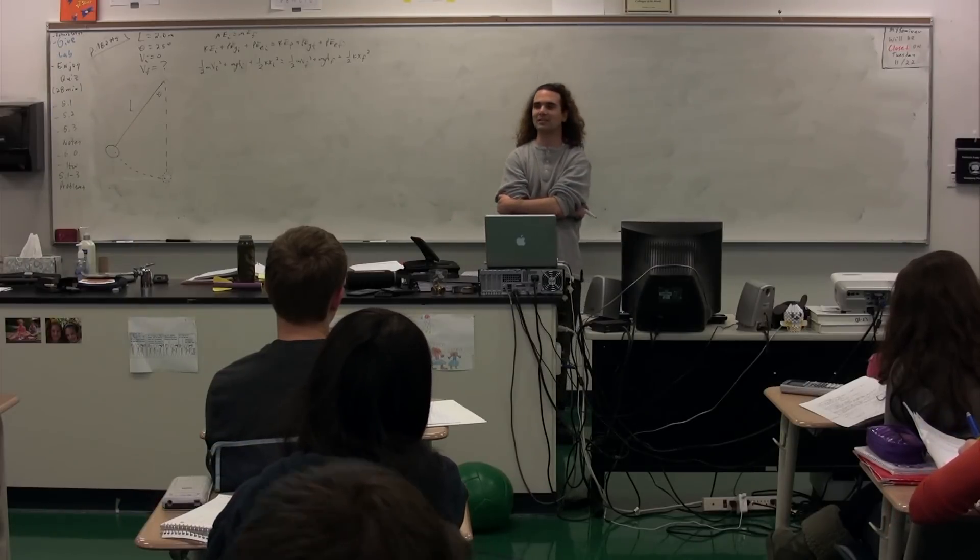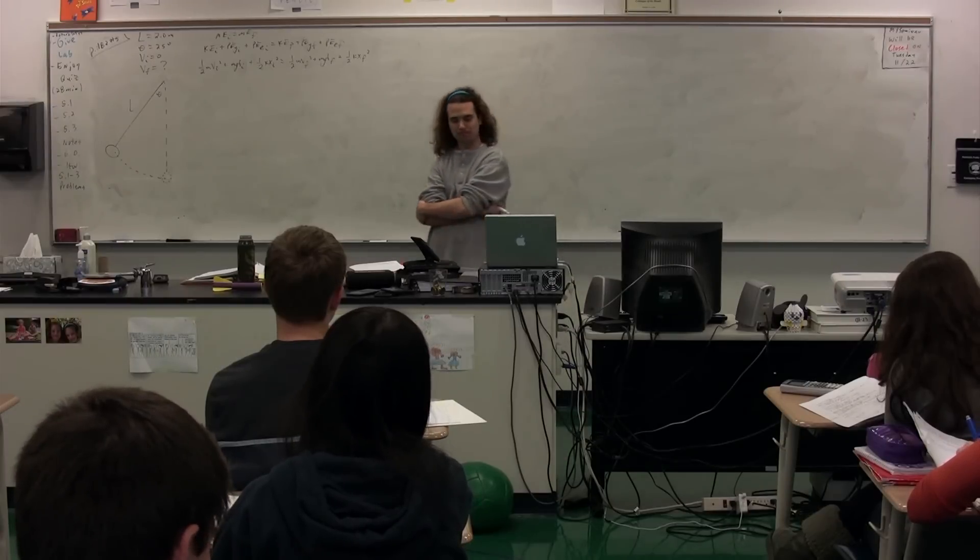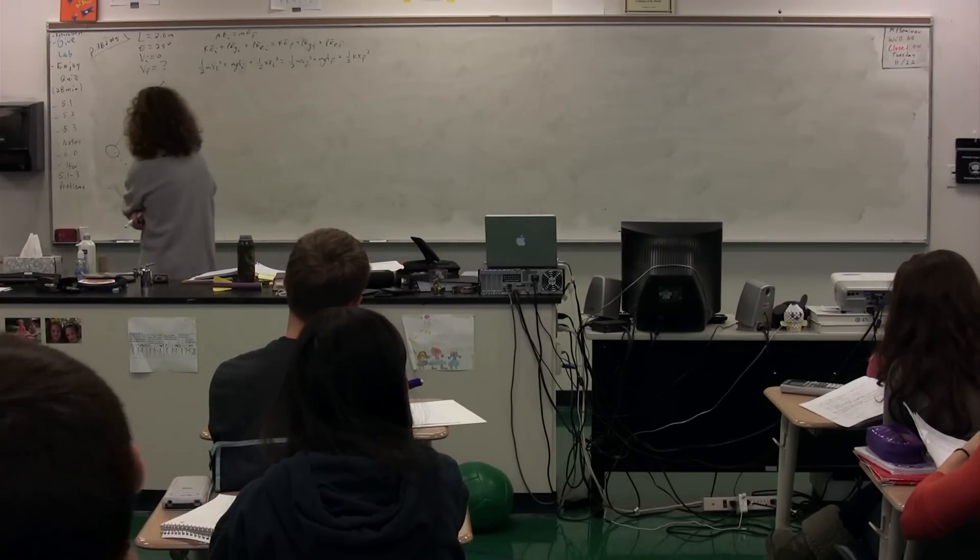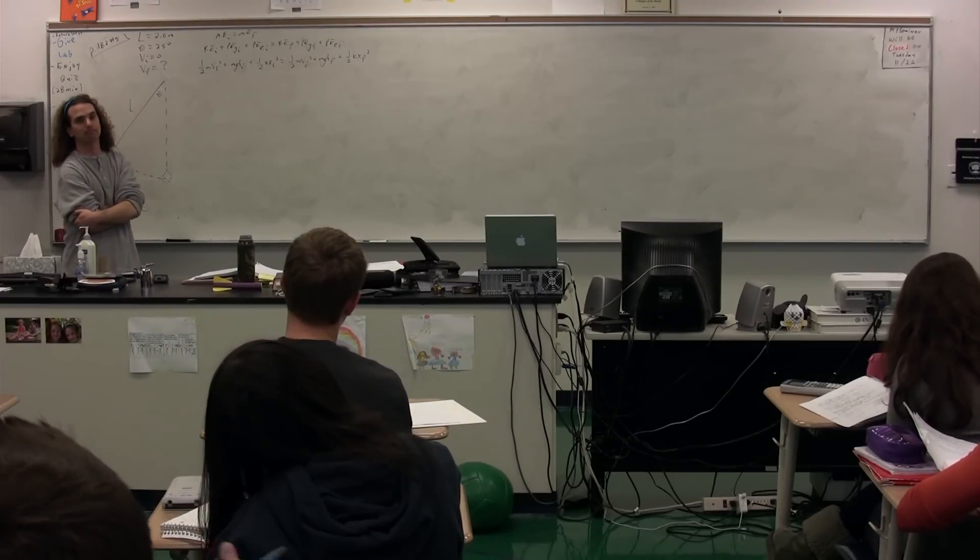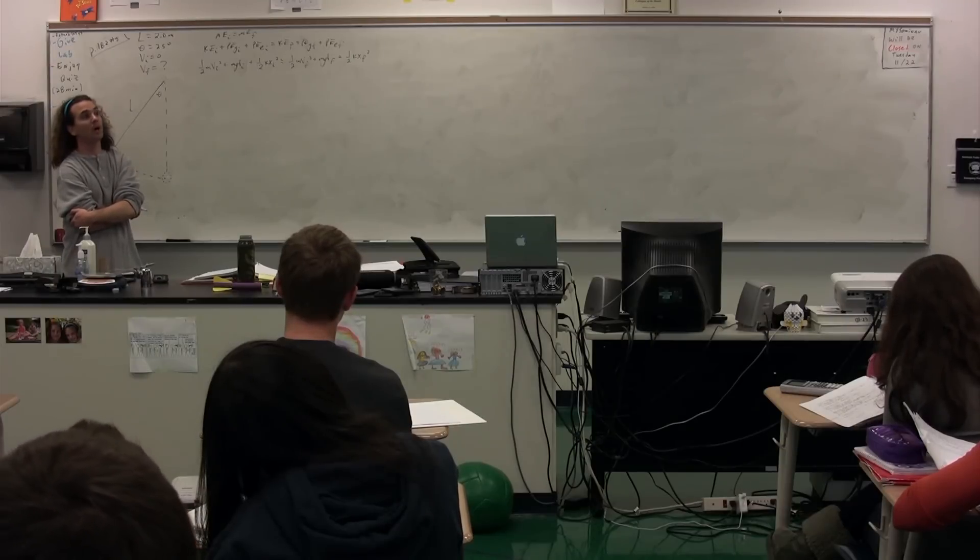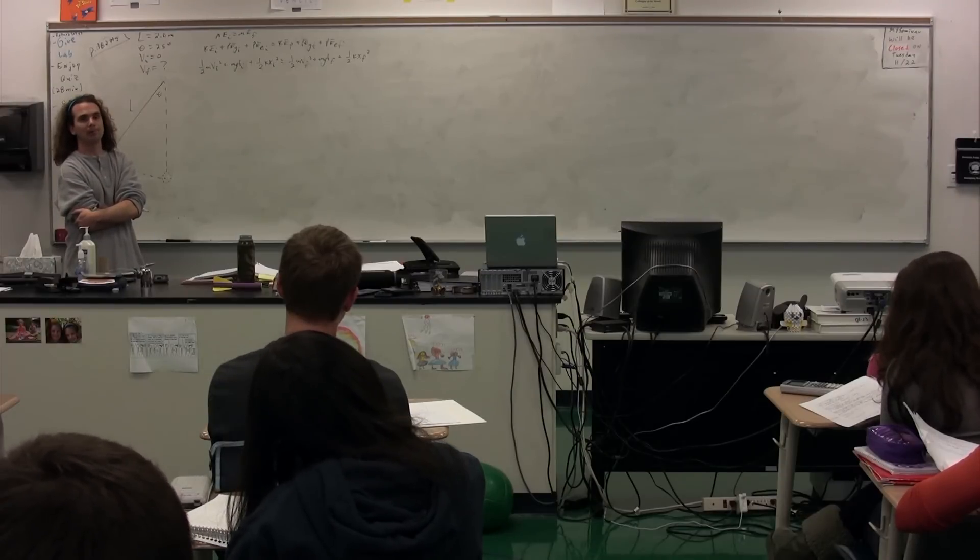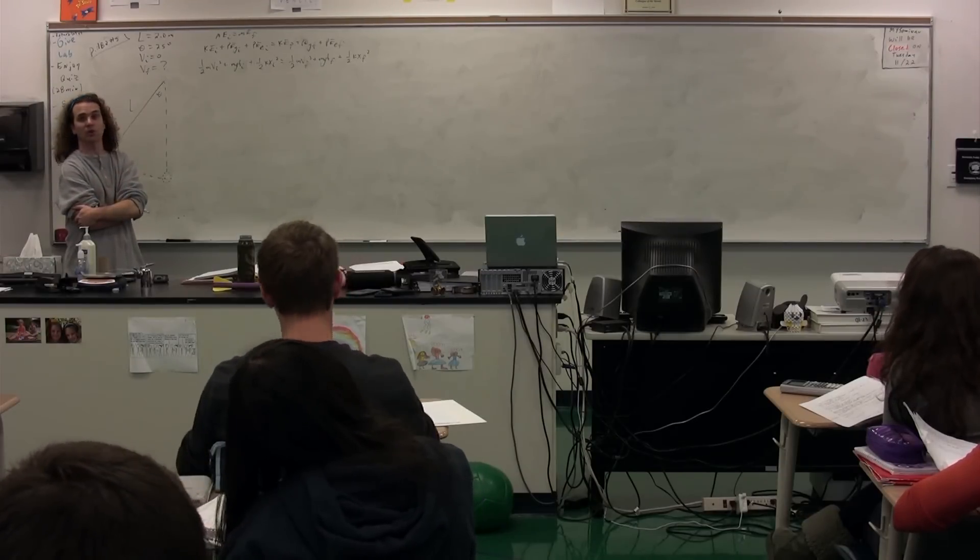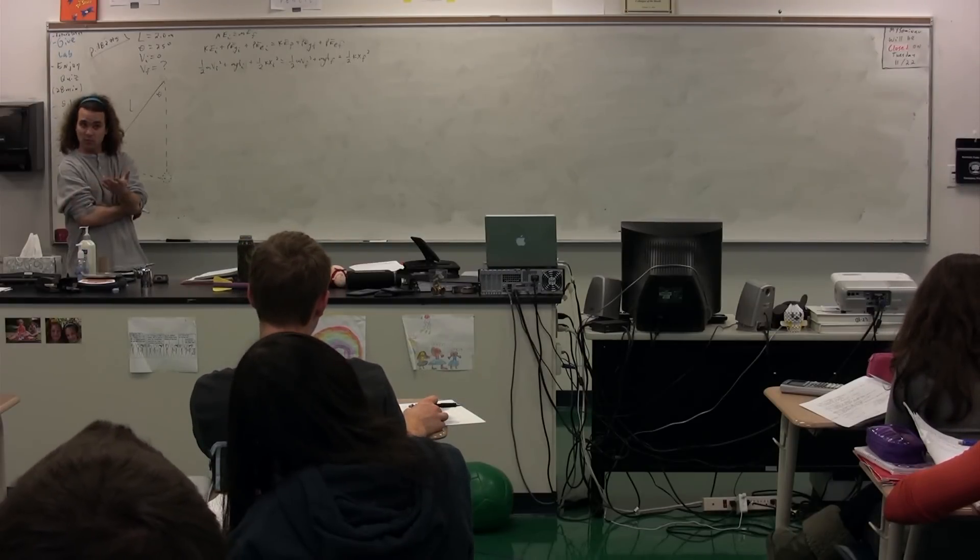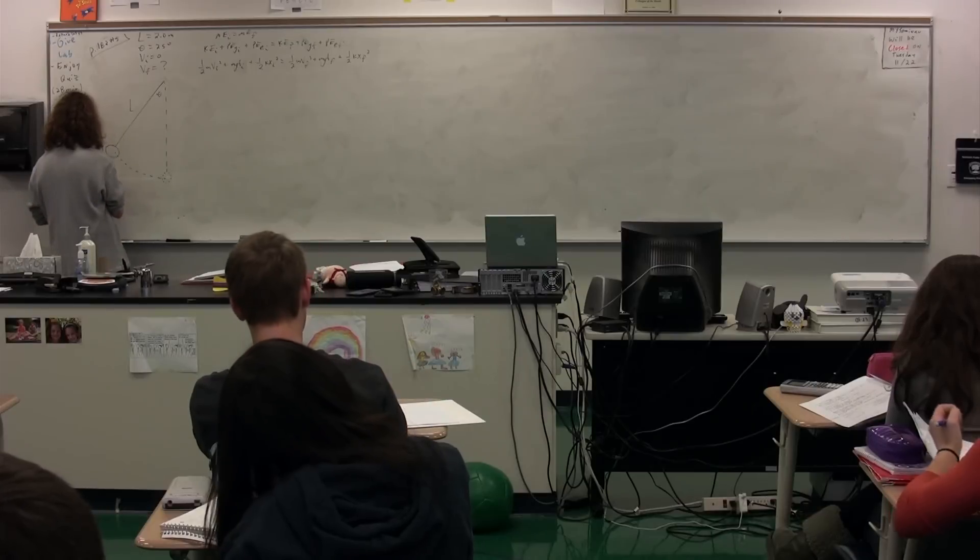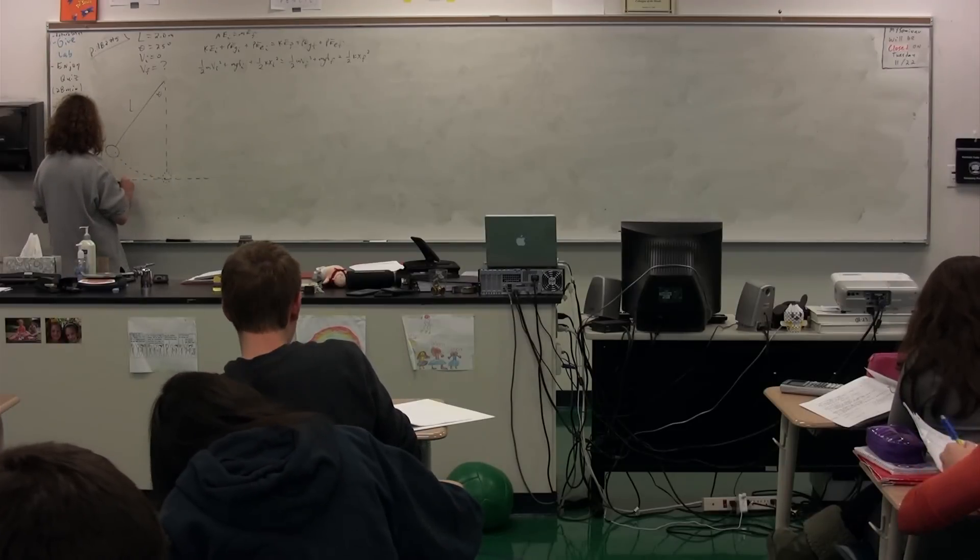Before we can use this equation, we need to identify what? Before we can use conservation of energy, we have to identify a few things. We actually already know that we have no friction. We need to identify some other things. The zero line. The zero line is one thing we need to identify. A logical place to do that would be here at this bottom position. So this would be what we're going to call our zero line right now.